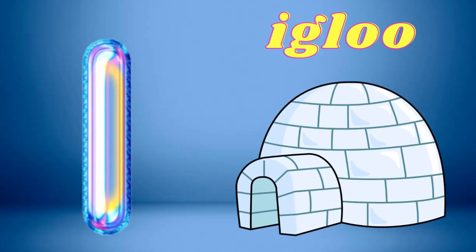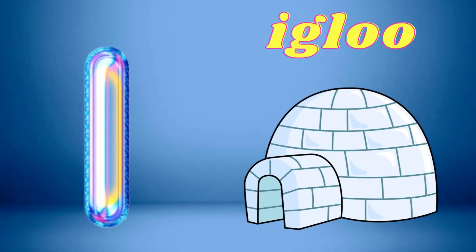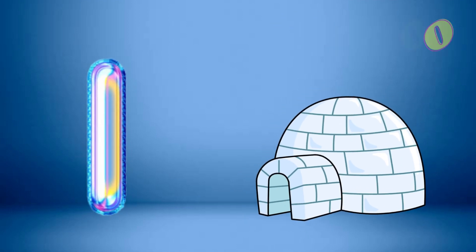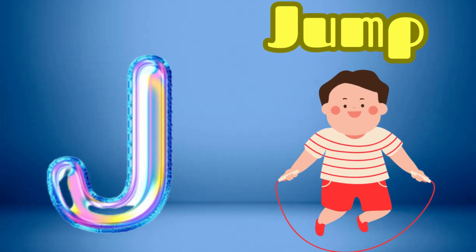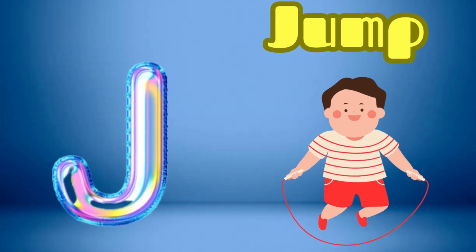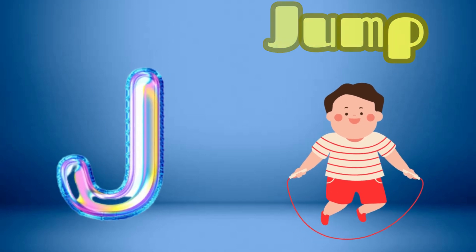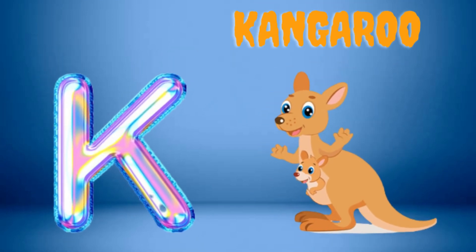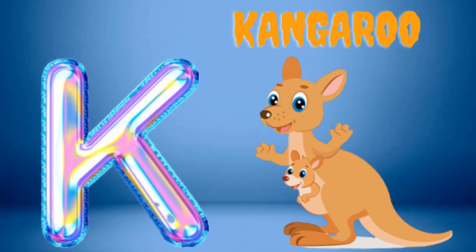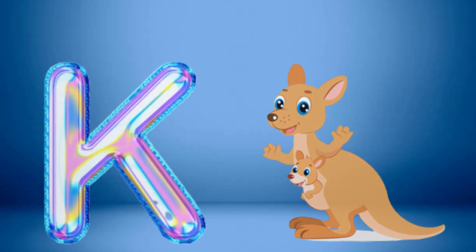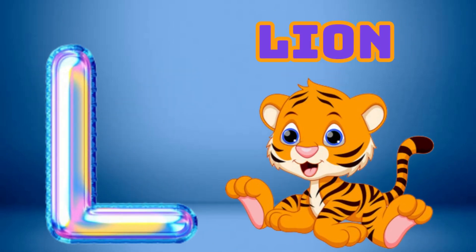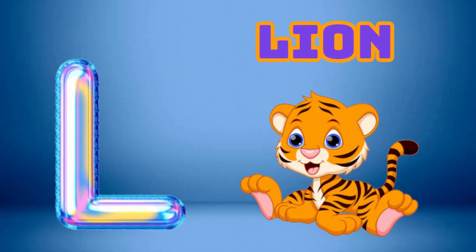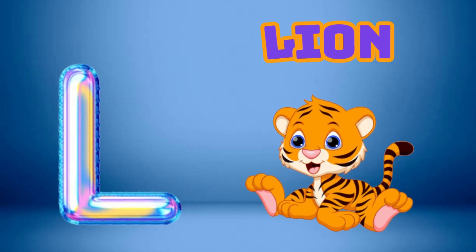I is for Igloo, I-I-Igloo. J is for Jump, J-J-Jump. K is for Kangaroo, K-Kangaroo. L is for Lion, L-L-Lion.